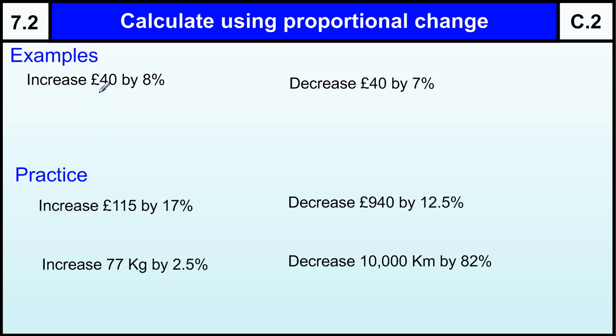So increasing £40 by 8%, we're going to start with 100% and then add 8% to make 108%. To work out 108% you need to times by 1.08.